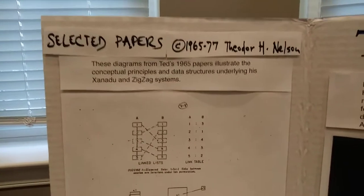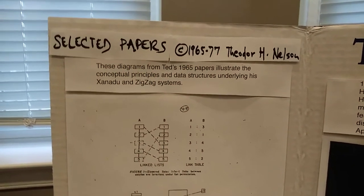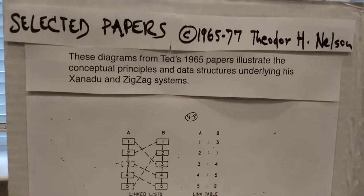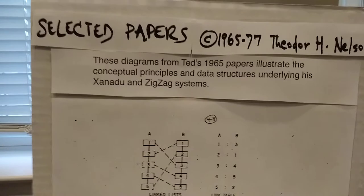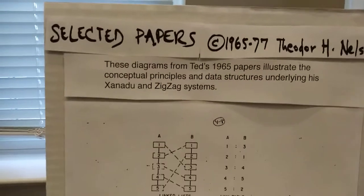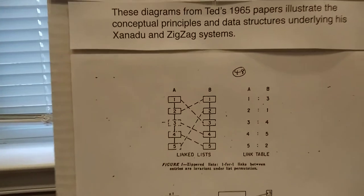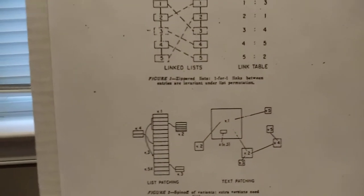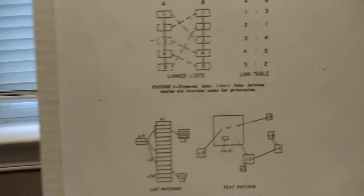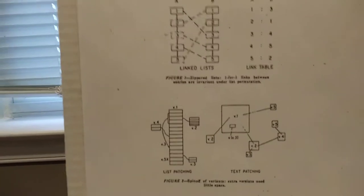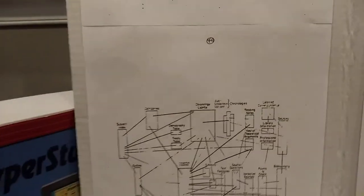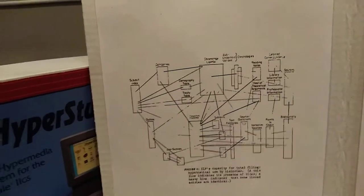Let's walk through this exhibit. On this panel, I am showing some selected papers written by Ted Nelson. He uploaded this document to the Internet Archive. What I'm showing is diagrams from 1965 with the conceptual principles and data structures underlying ZigZag and Xanadu. For example, this is a zippered list, and then this is showing the Jot system where successive revisions are just adding to text, which is very similar to the way append-only logs work in today's decentralized systems.